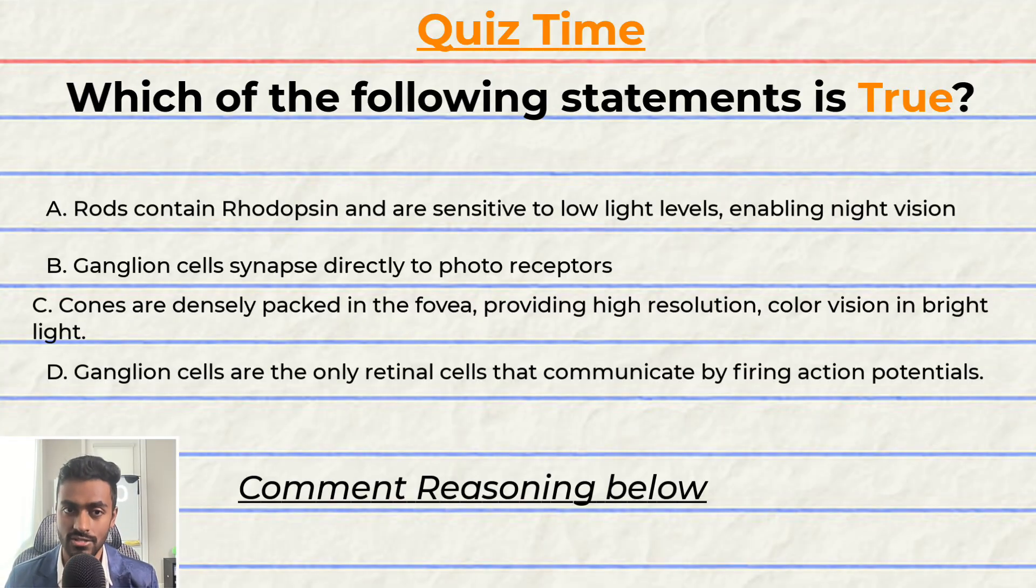Quiz time. Have you been paying attention? Let's quiz you to find out. Which of the following statements is true? A. Rods contain rhodopsin and are highly sensitive to low level lights enabling night vision. B. Ganglion cells synapse directly onto photoreceptors. C. Cones are more densely packed in the fovea providing high resolution color vision in bright light. Or D. Ganglion cells are the only retinal cells that communicate by firing action potentials. I'll give you a few seconds to answer this question.